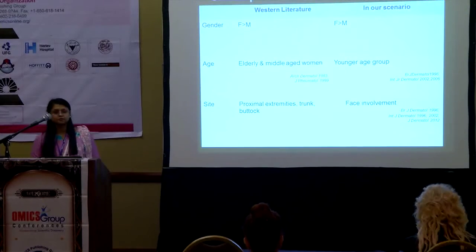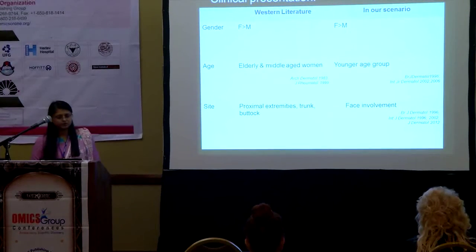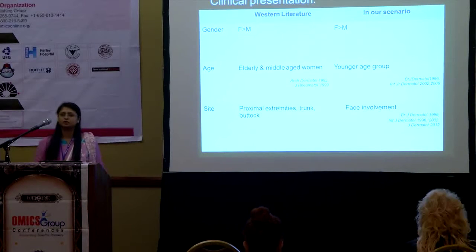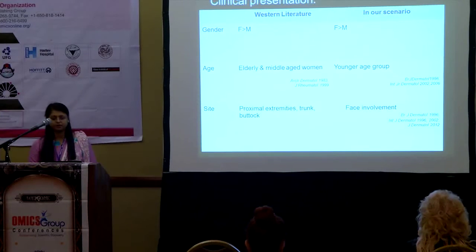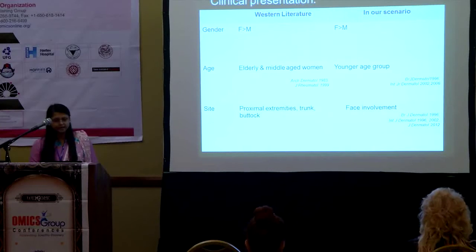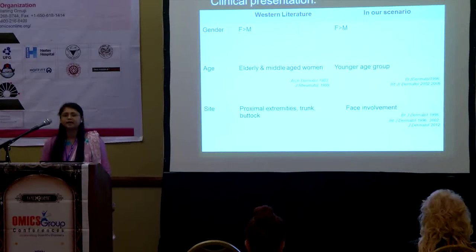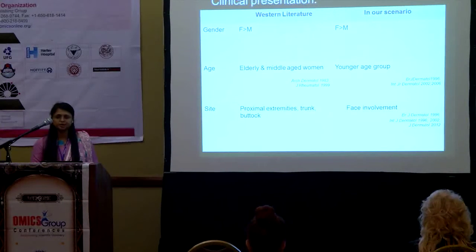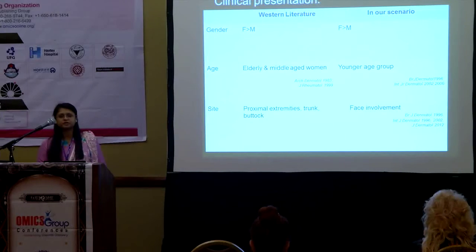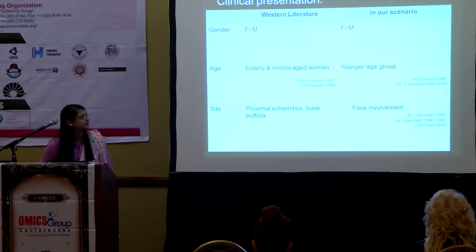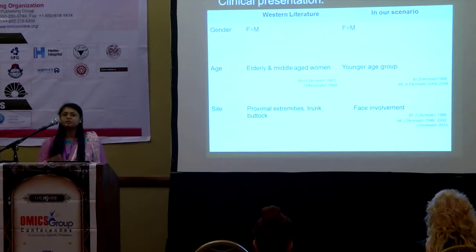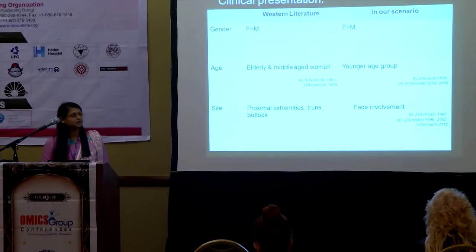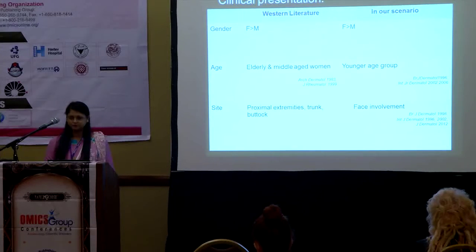Comparing clinical presentation with the Western literature: gender distribution was similar, with females more commonly affected in both. However, age of presentation in the Western literature is mainly in elderly and middle-aged women, whereas in our series it was found mainly in the younger age group. The common site in Western literature is proximal extremities, trunk, and buttocks, but in our series face involvement was predominant.